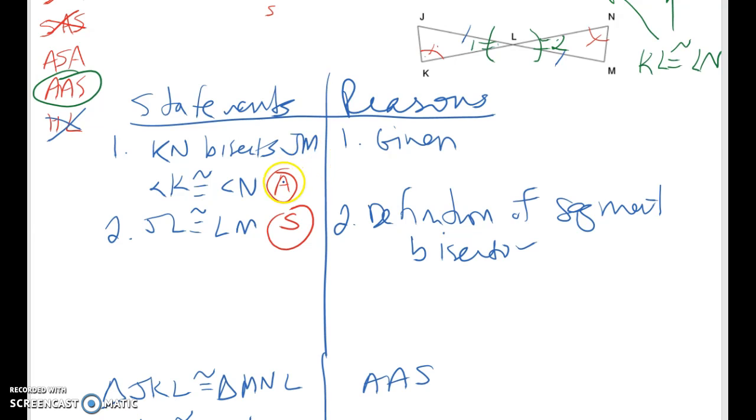Looking at my statements and reasons above, I have a statement about an angle, a statement about a side, I need another statement about an angle. So I'm going to say that angle one is congruent to angle two. Those are vertical angles are congruent.